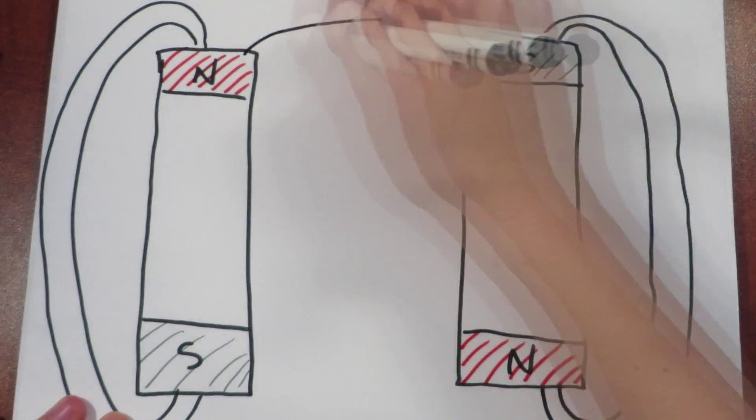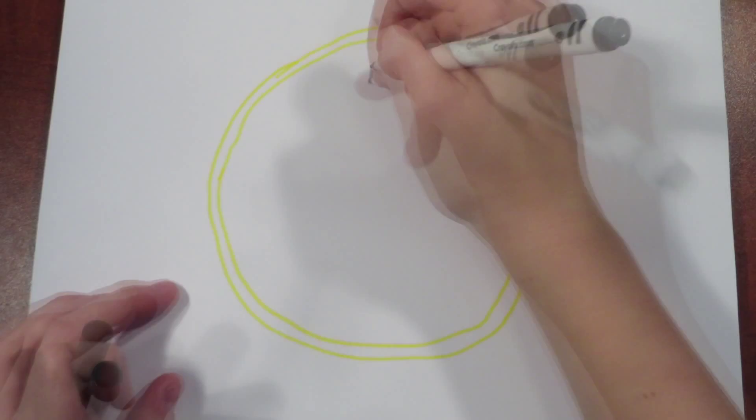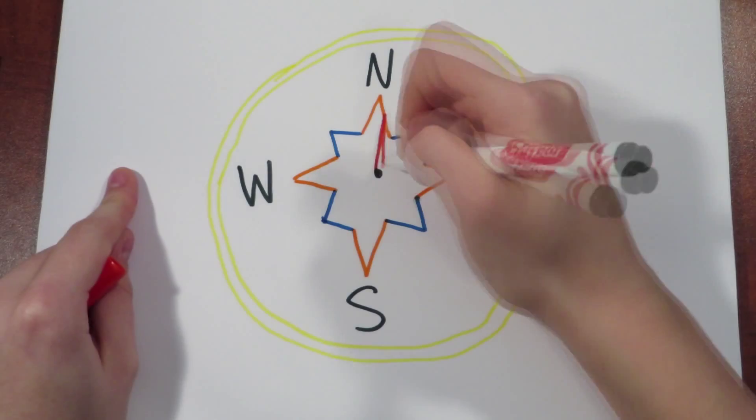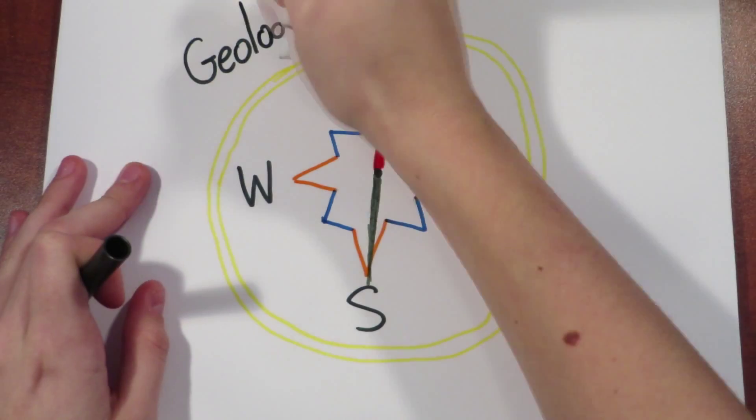So the north attracts the south, and the south attracts the north. A compass is said to point north. However, the north end of the compass that shows the geological north isn't showing the magnetic north.